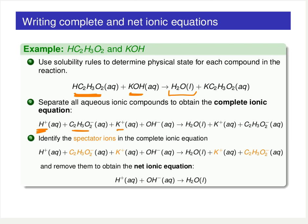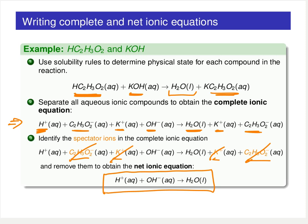Water is a liquid and doesn't break apart — we keep it intact for the complete ionic equation. We break apart our aqueous solution of potassium acetate. This is now our complete ionic equation. Going back through, the acetate and potassium are just sitting around in solution — they are our spectators. If we cross them out, we end up with the net ionic equation. Notice that for an acid-base neutralization process, the net ionic equation is just the neutralization reaction forming water.